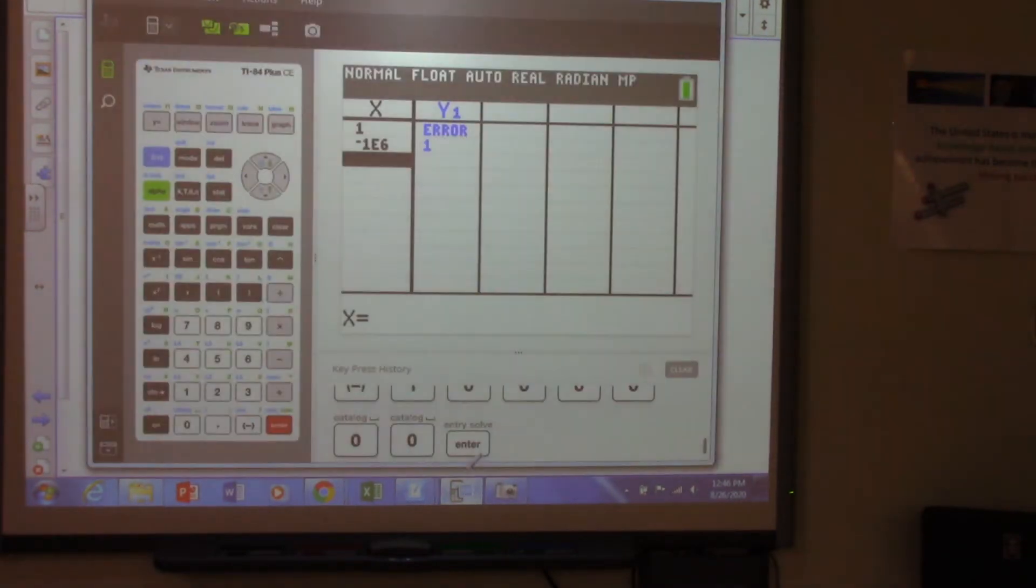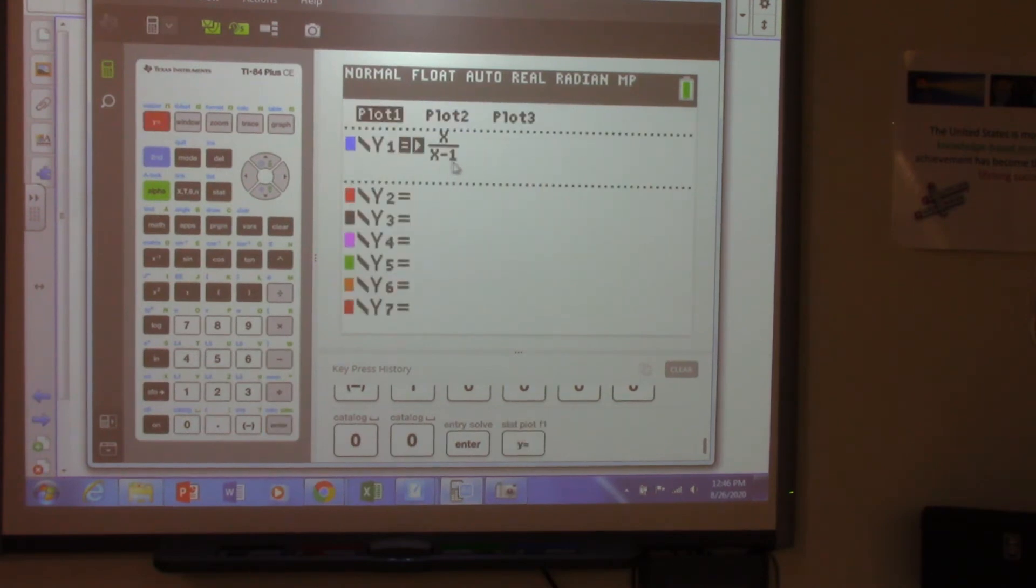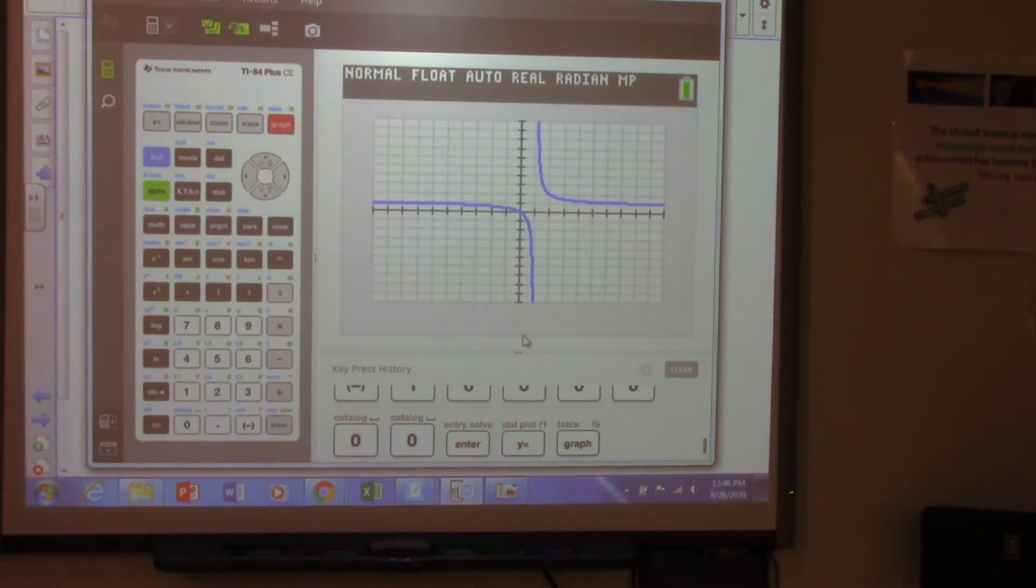So we go here to the calculator and we have this function here, which I graphed in the last class. And then you graph and you see this, right?